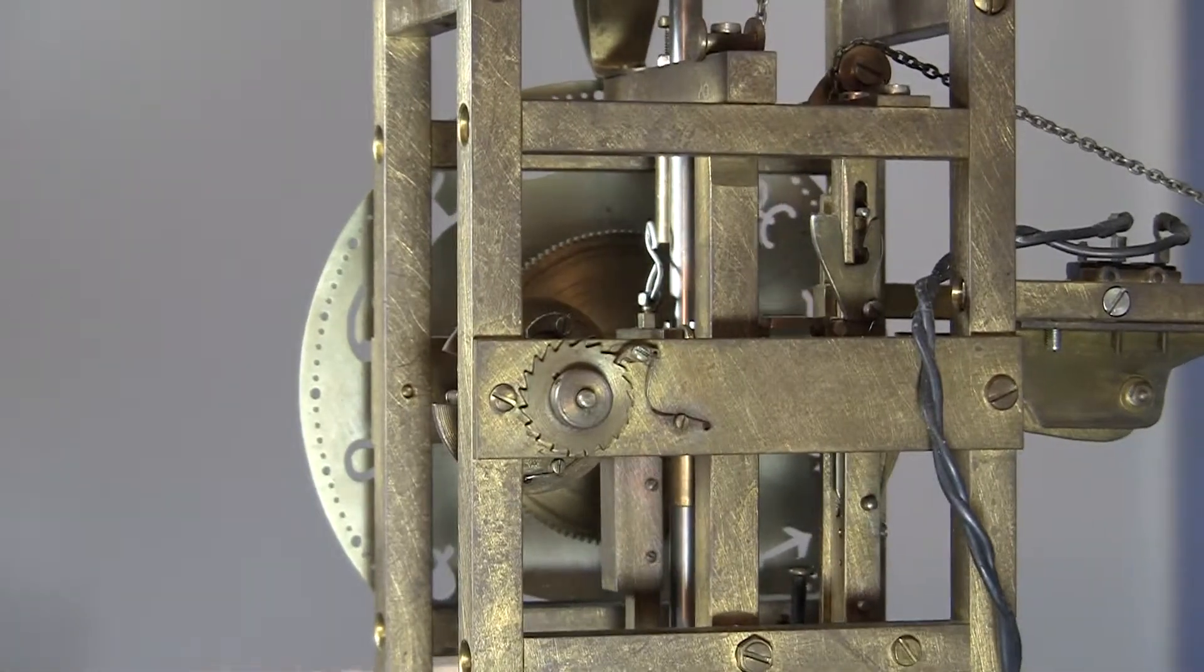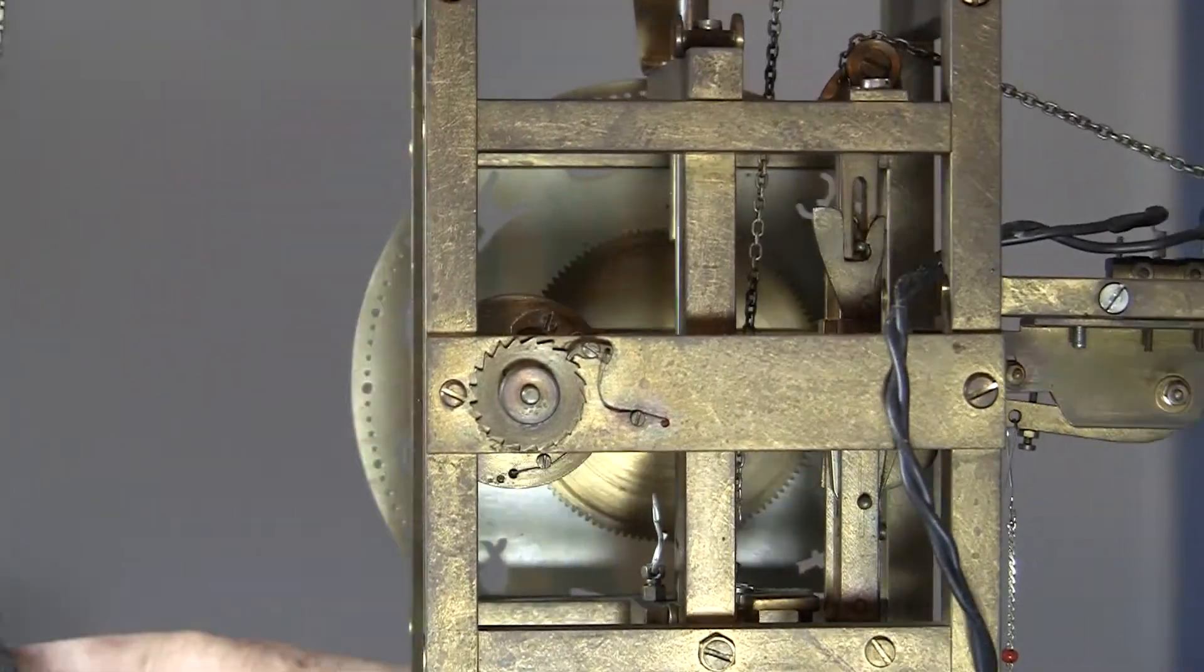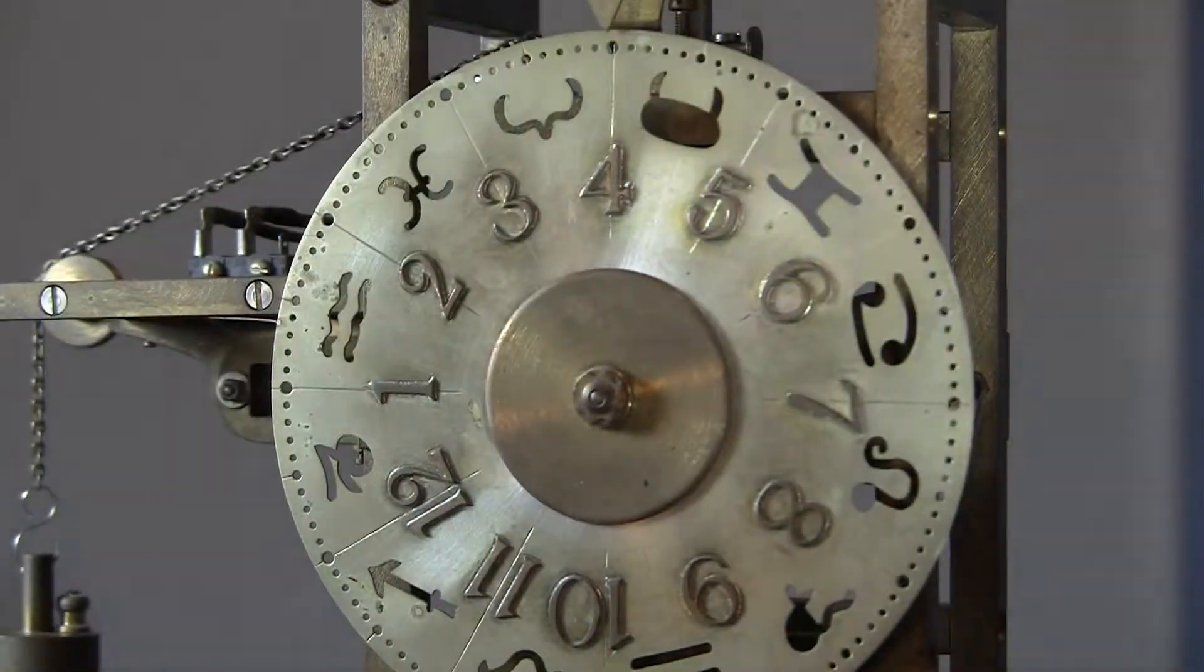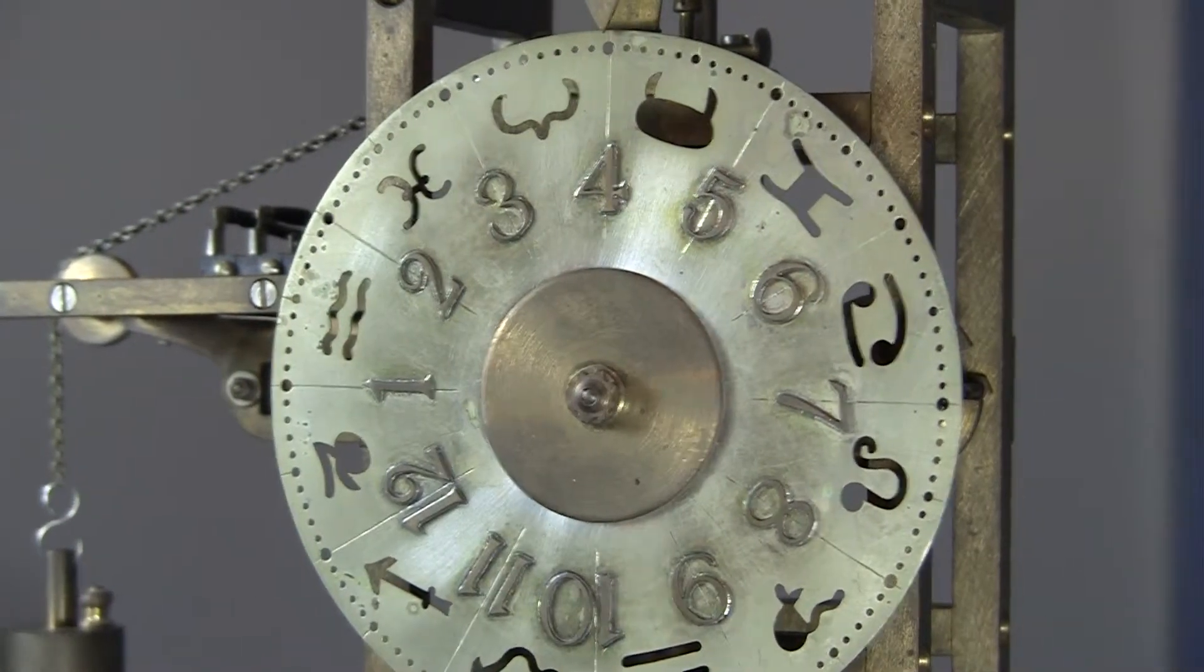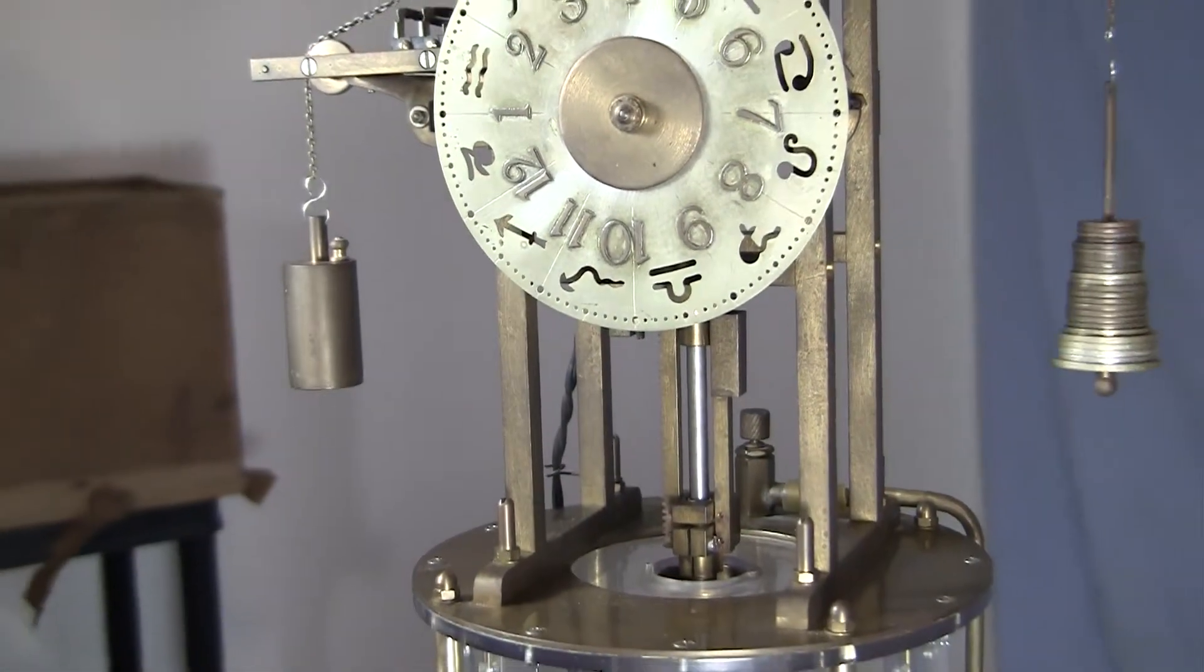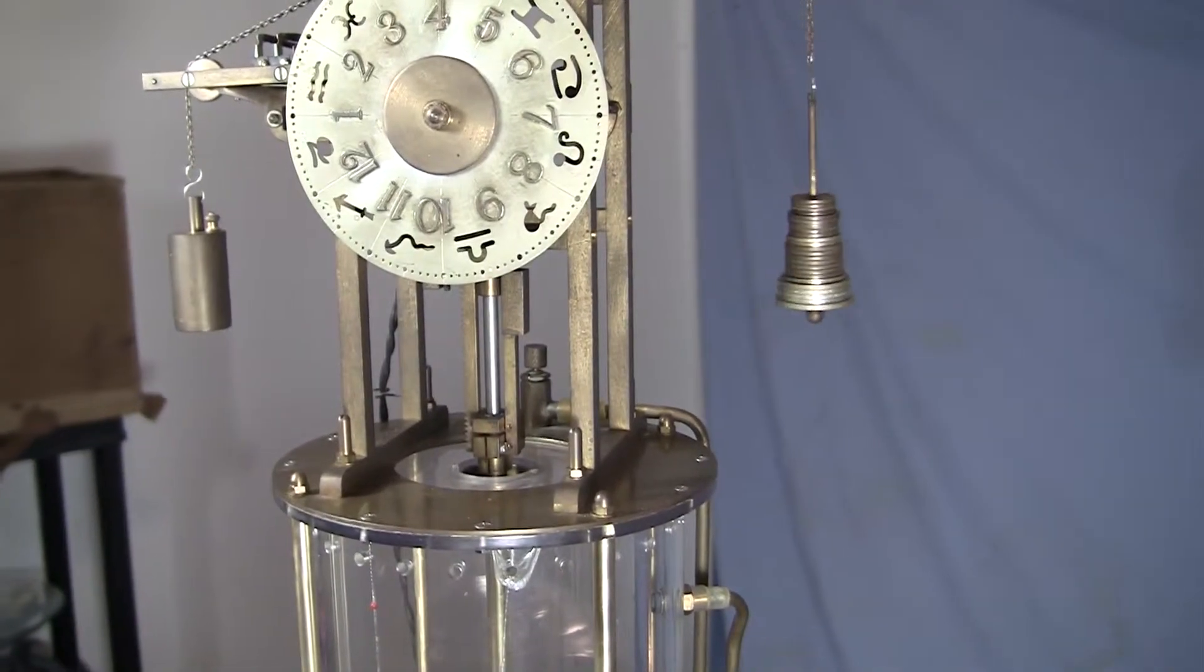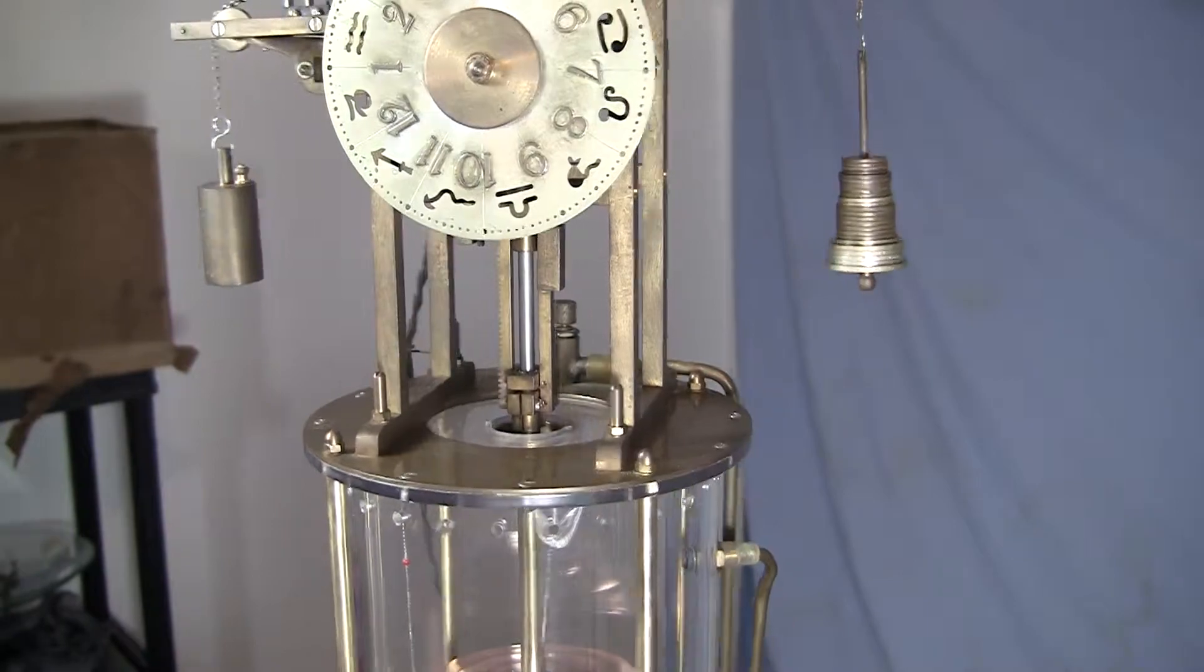And that's the most basic how it works. You have to time the fill cycle and drain cycle to get the clock to advance fast enough so that it'll keep time with the hours. There's two weights here.